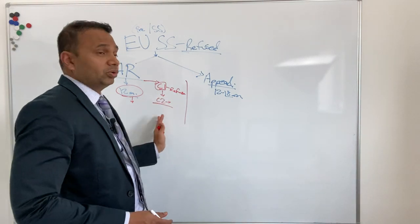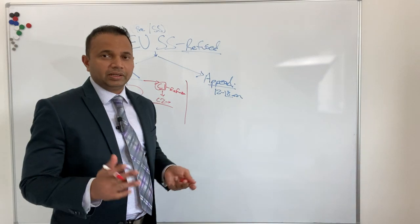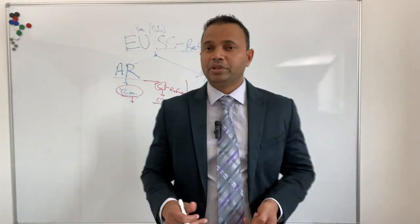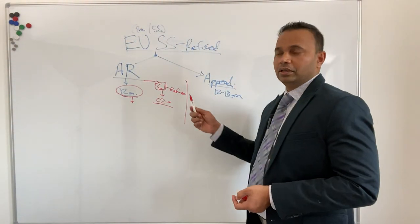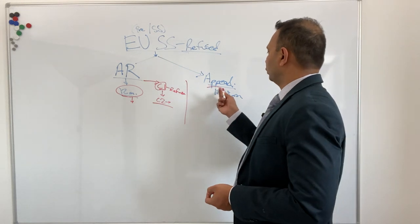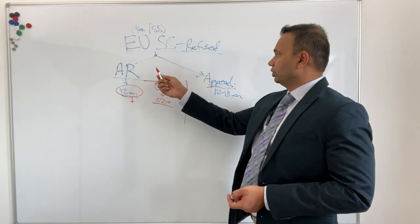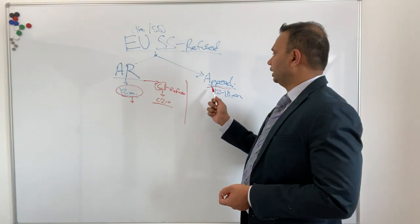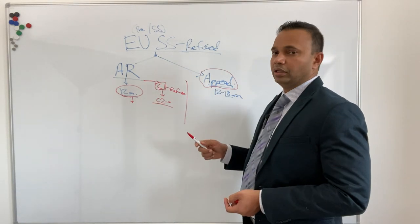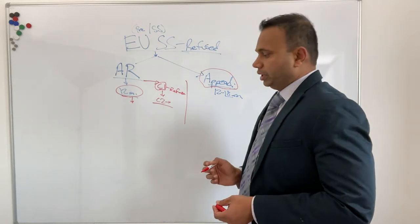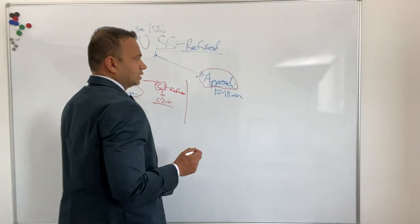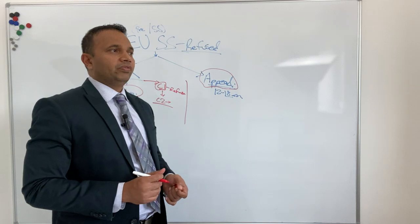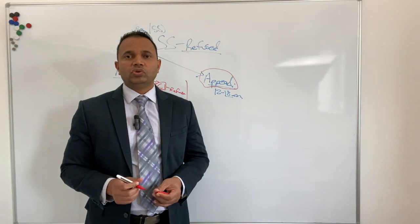After doing that AR you also have the option of going for an appeal, but you've wasted considerable time doing the AR. When the EUSS is refused, you have the alternate option of not going for administrative review but directly going for an appeal.